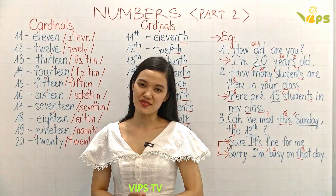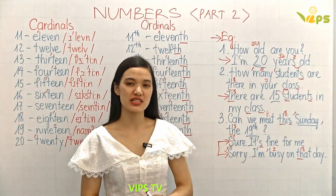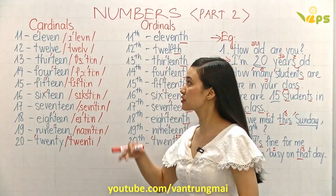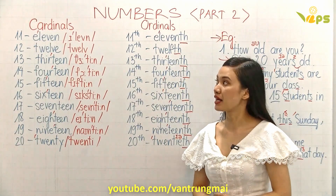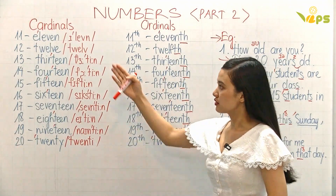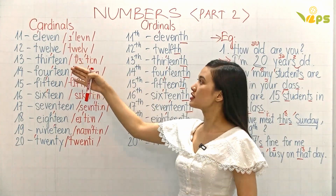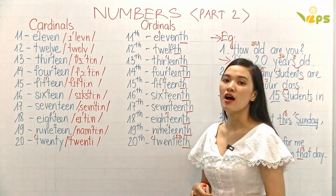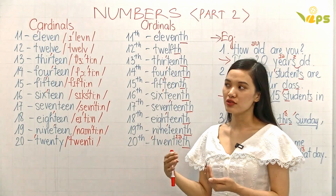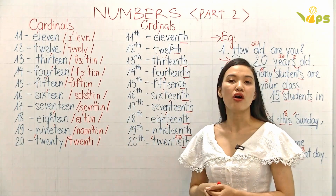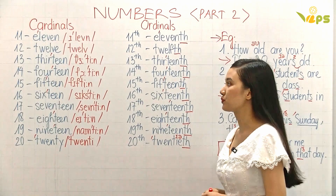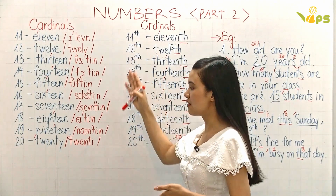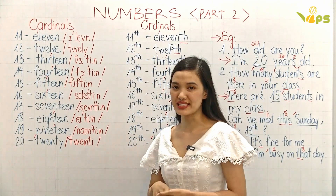Hi there, welcome back to VIPS TV. Today we're going to study part 2 of numbers, okay? Cardinals — the usual numbers — and ordinals — the numbers about order. Now, today we're going to study from number 11 to number 20.